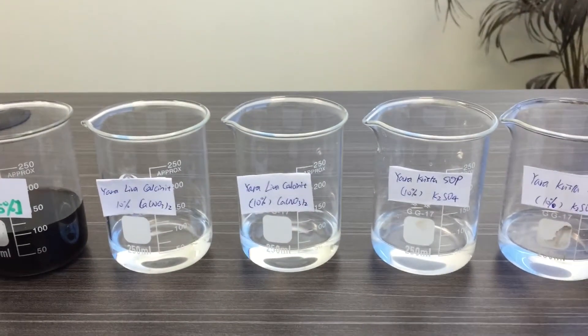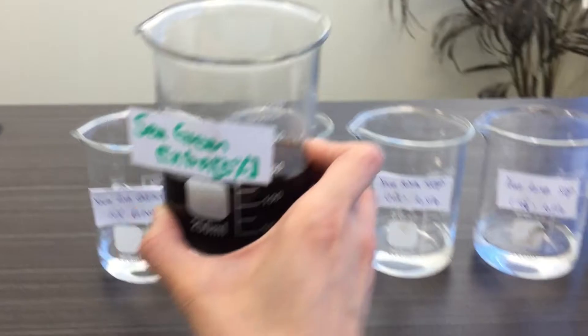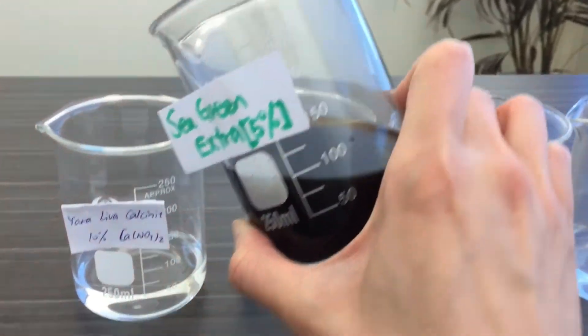So the first thing I'm going to do is take the 100 ml of Sea Green and pour it into the calcium nitrate solution.